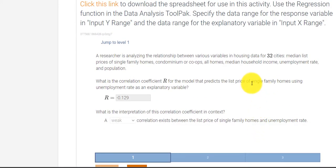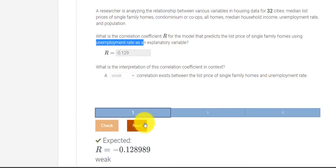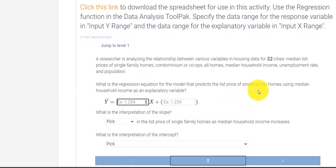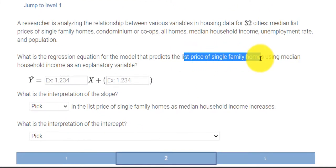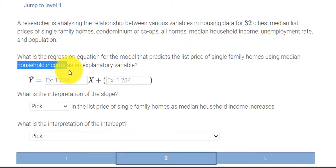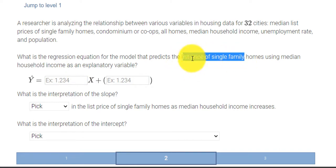So this first problem had single family home prices and unemployment rate. When I click next, you have to be careful because they change it on us. Now it's list price of single family homes. And now we have household income. And again, on your screen, you might have something different because these problems change for each student. But it looks like we want the regression equation.